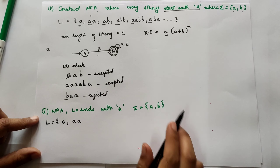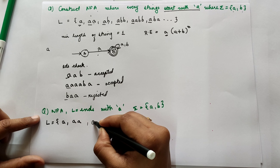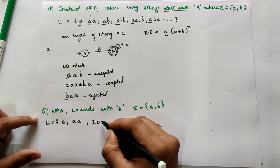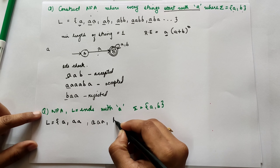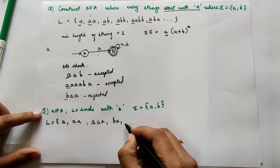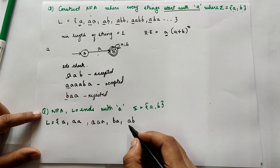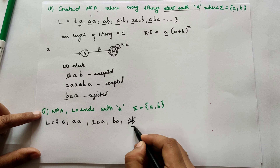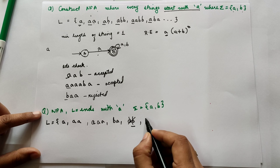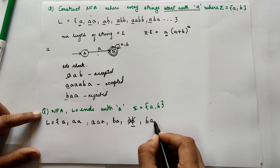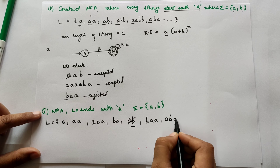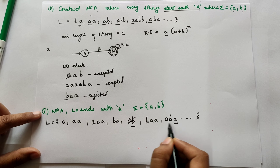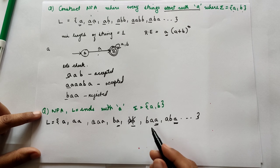Examples include: A, AA, AAA, BA, BAA, ABA. We cannot take AB because it is not ending with A. The string can be anything, but the last character must be A. They have specifically mentioned the end should be with A.